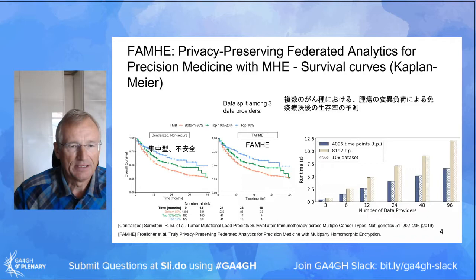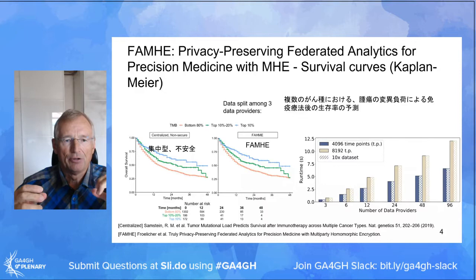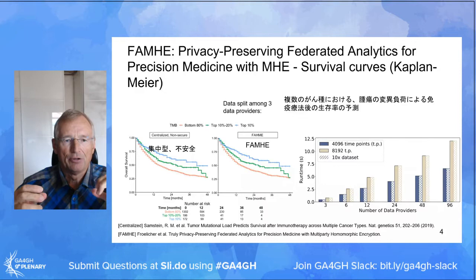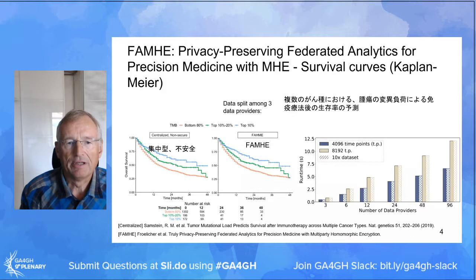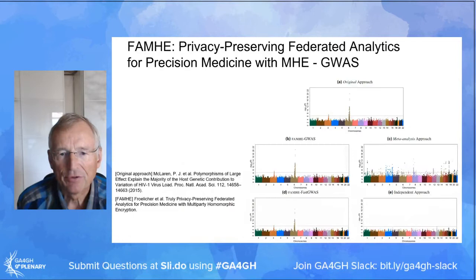This shows that — and I think this is exactly what GA4GH is trying to achieve — and will be a fundamental building block to move forward. We also show this can be achieved with a runtime that is very, very modest. What is shown on this example is survival curves with Kaplan-Meier statistic computation.